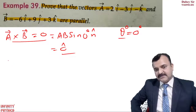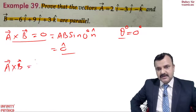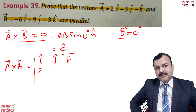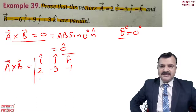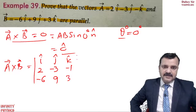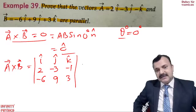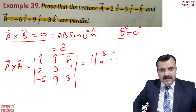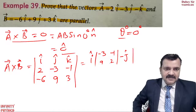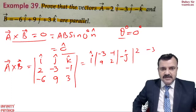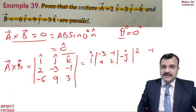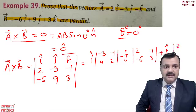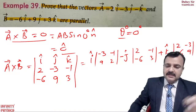To prove this, write vector A cross vector B using the determinant formula with i cap, j cap, k cap. Write i cap first, then j and k terms: minus 3, minus 1, 9, and 2. Then minus j: write 2, minus 1, 3. Then plus k cap: write i and j values — 2, minus 3, minus 6, and 9.